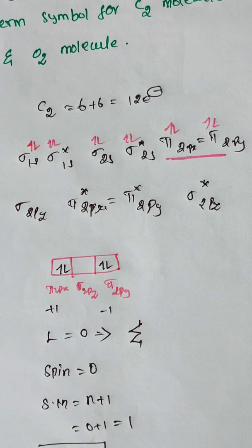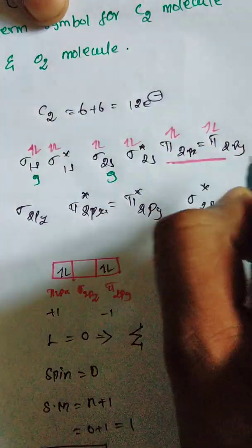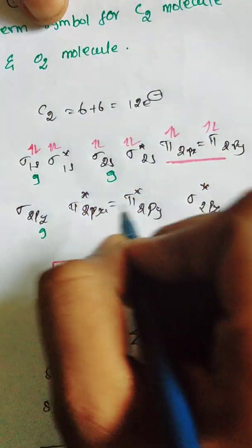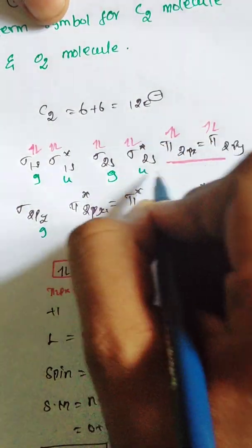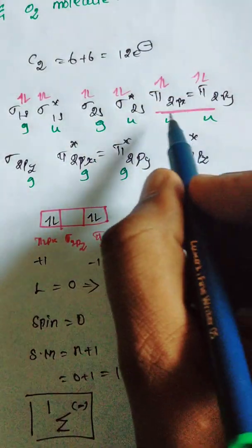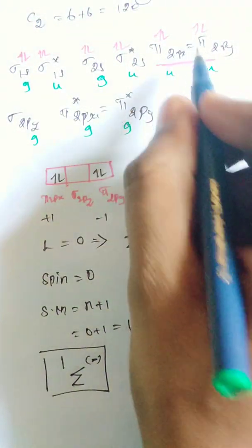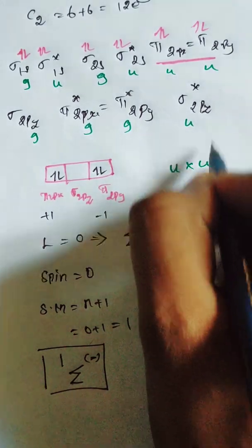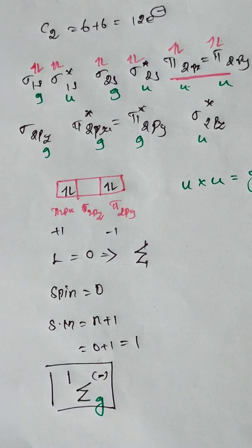Sigma bonding orbitals are gerade and pi* anti-bonding orbitals are gerade; remaining orbitals are ungerade. The last electrons are in pi 2px and pi 2py — both are ungerade. Ungerade multiplied by ungerade gives gerade. Since the last electron is in a pi orbital, we use the minus superscript. Therefore the ground state molecular term symbol for C2 is ¹Σg⁻.